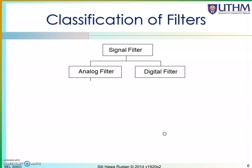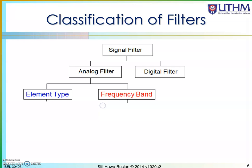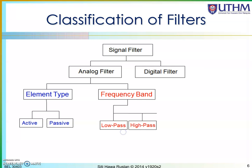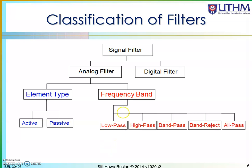We can classify filters as analog or digital. Digital filters are covered in digital signal processing class, so here we concentrate on analog filters. We classify filters in terms of frequency band and element type. In terms of frequency band, we have low pass, high pass, band pass, band reject, and all pass filters.